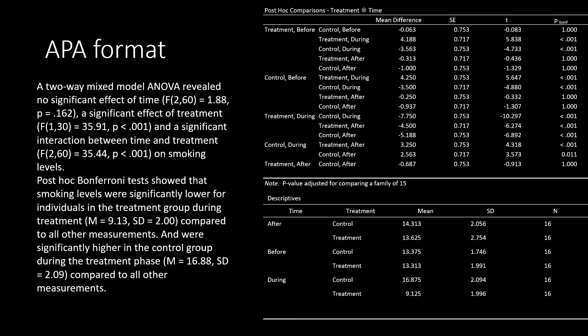Our post hoc analysis showed that during the treatment phase, smoking levels for those in the treatment group were lowest. To write that up in APA format: post hoc Bonferroni tests show that smoking levels were significantly lower for individuals in the treatment group during treatment — providing means and standard deviations — compared to all other measurements. We also found they were significantly higher for individuals in the control group during the treatment phase, compared to all other measurements. Thanks for watching this video on conducting a two-way mixed model ANOVA in JASP.